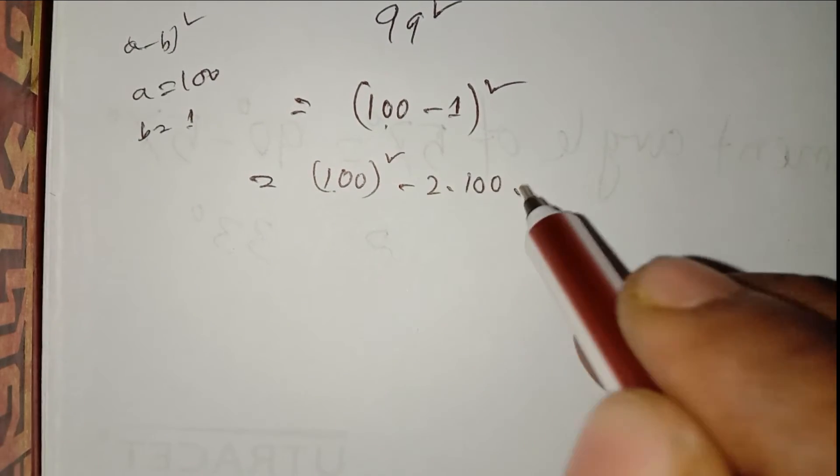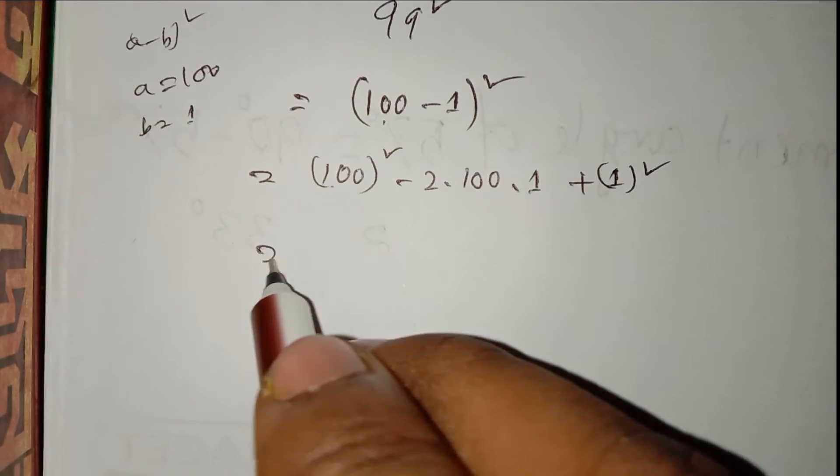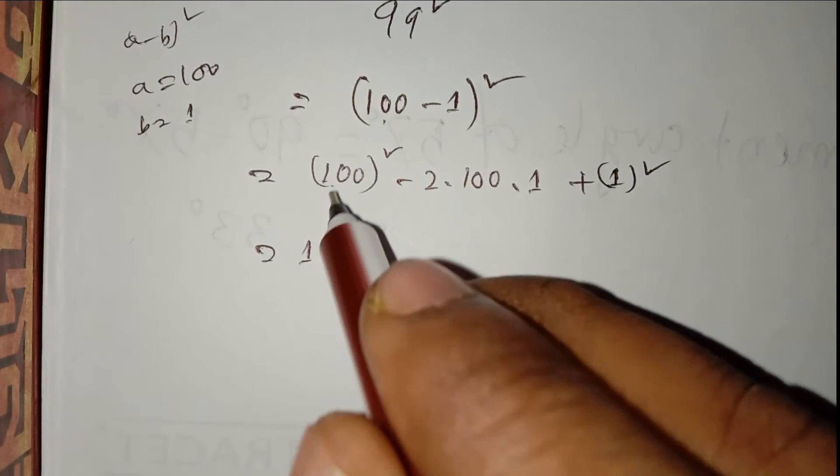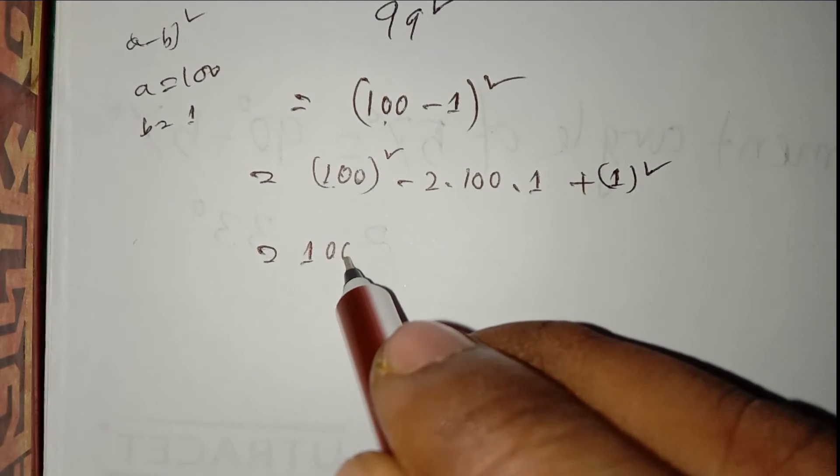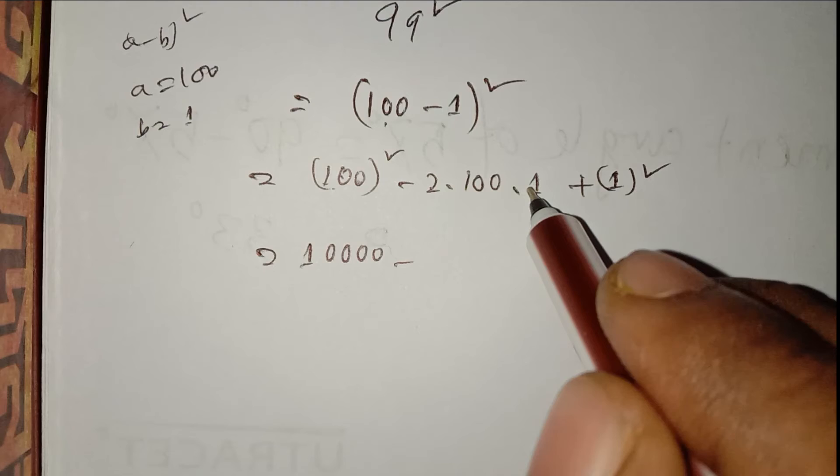Equals 10,001. Here is 200, that means it will be 400, minus 2 into 1 equals 2 times 1 equals 200 plus 1.